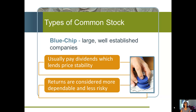Let's talk about types of common stock. We have something called blue chip stocks — those are the large, well-established companies. Oftentimes when we look at the Dow stocks, the Dow Jones Industrial Average, that's a measure of these large, older, well-established blue chip firms.